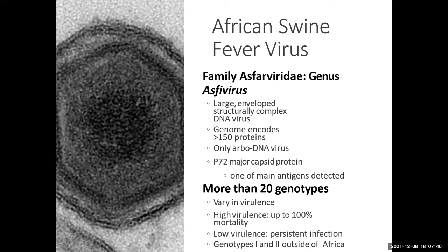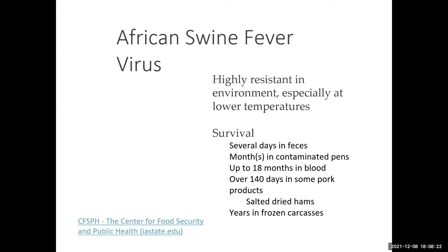The P72 protein is one of the major proteins on the capsid. There are 20 genotypes, and they can vary in virulence from very high virulence with up to 100% mortality to low virulence where you get persistent infection. Genotypes one and two are the genotypes that have been found outside of Africa. That's one reason it can be hard to detect initially — it might not cause really high mortality in all cases and may have a much slower progression.